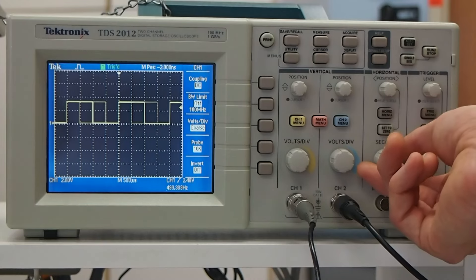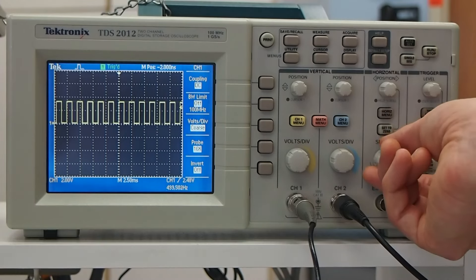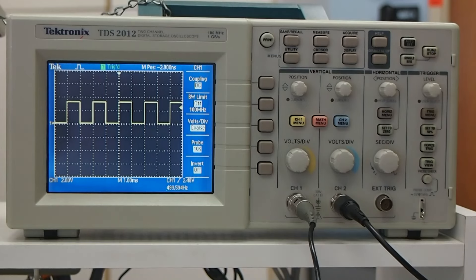And then your horizontal scale will let you zoom in and out on the x-axis.